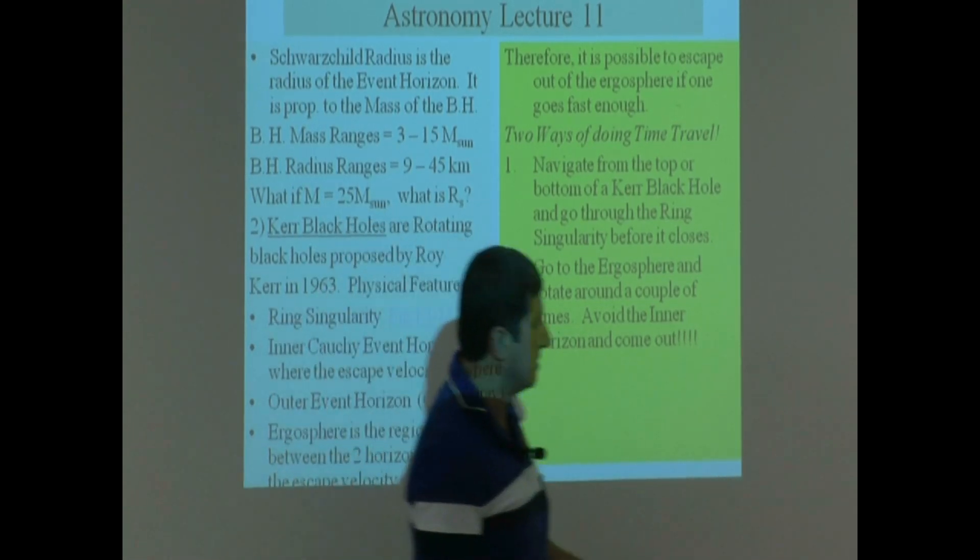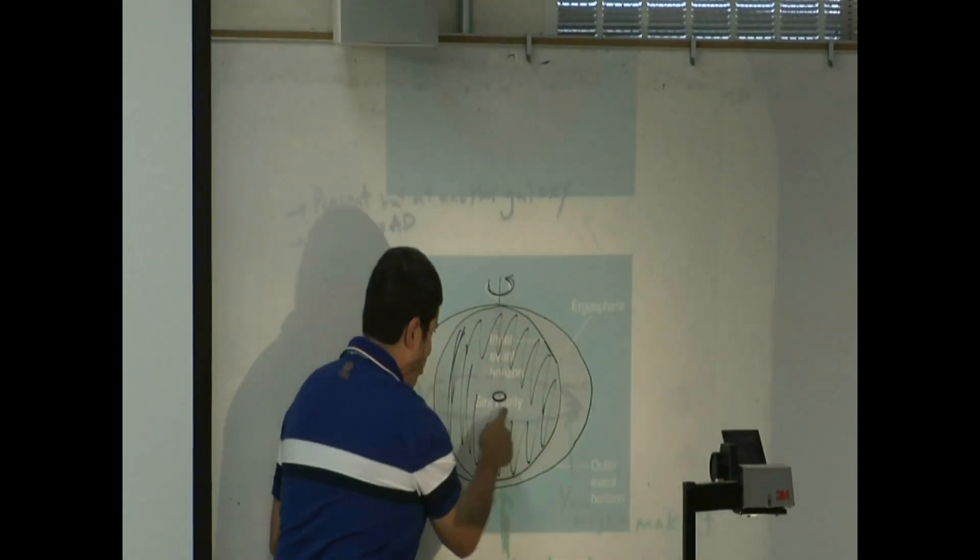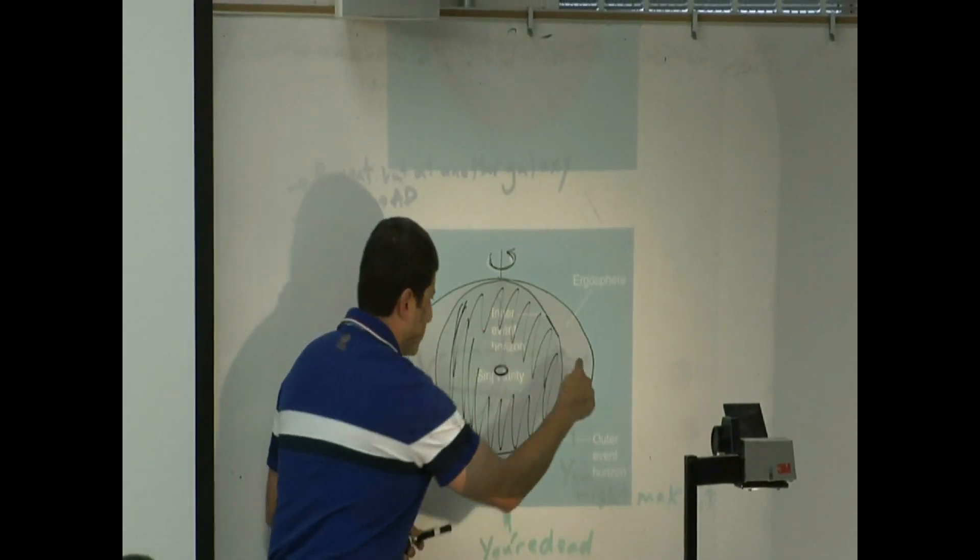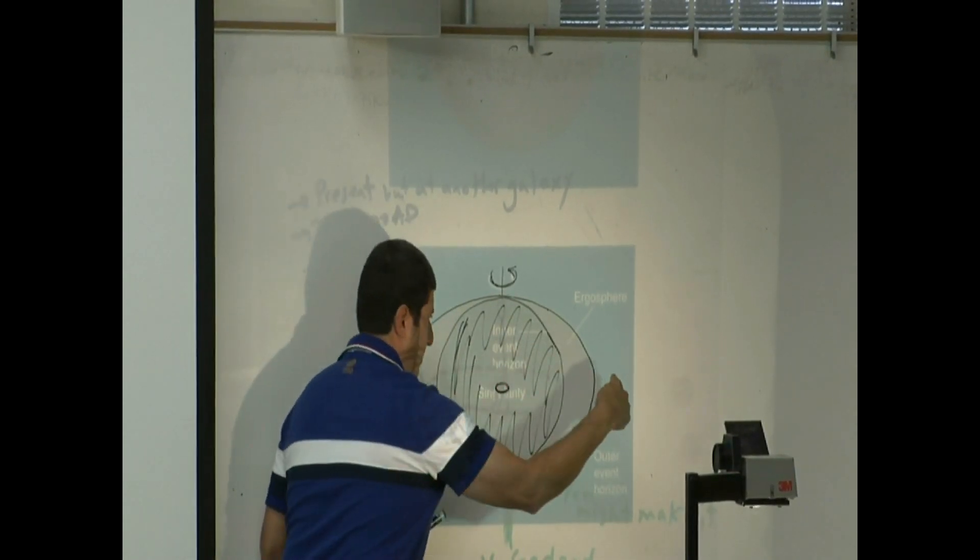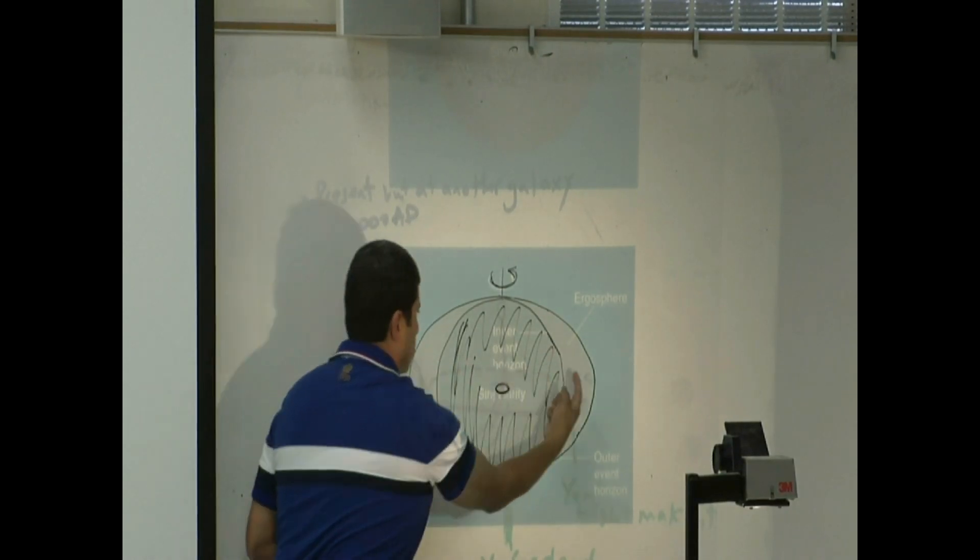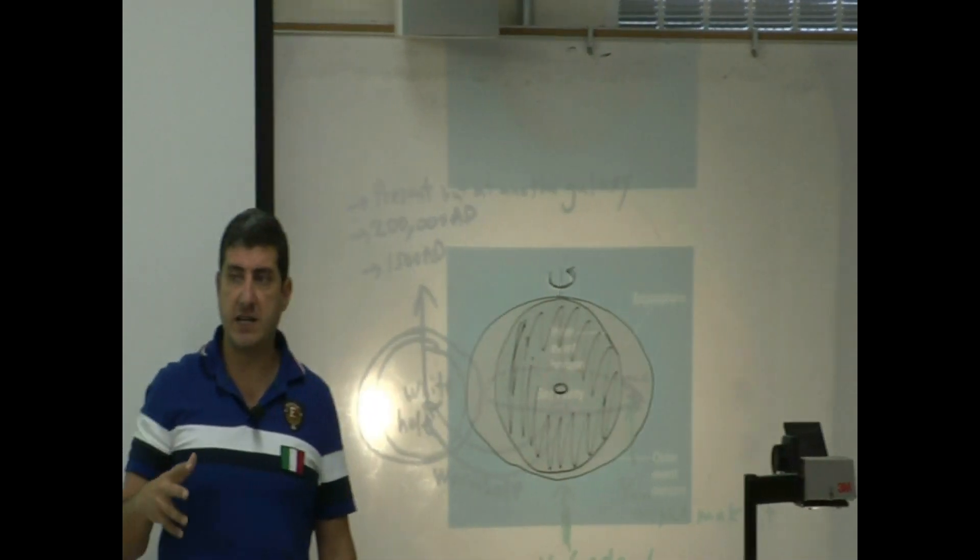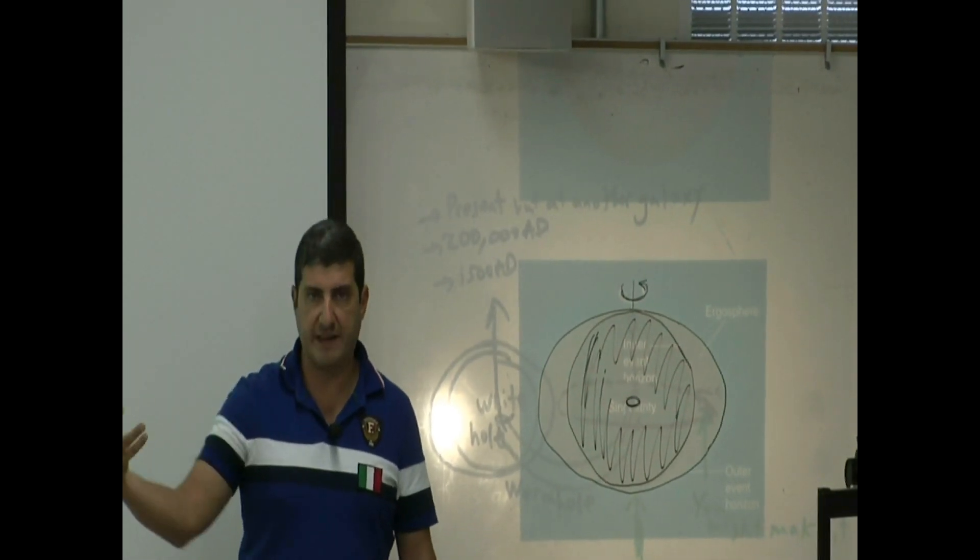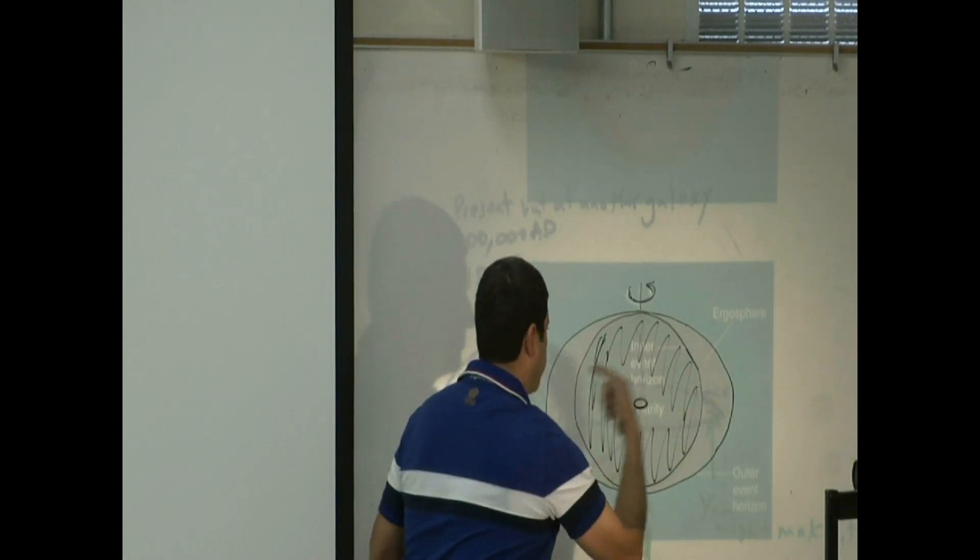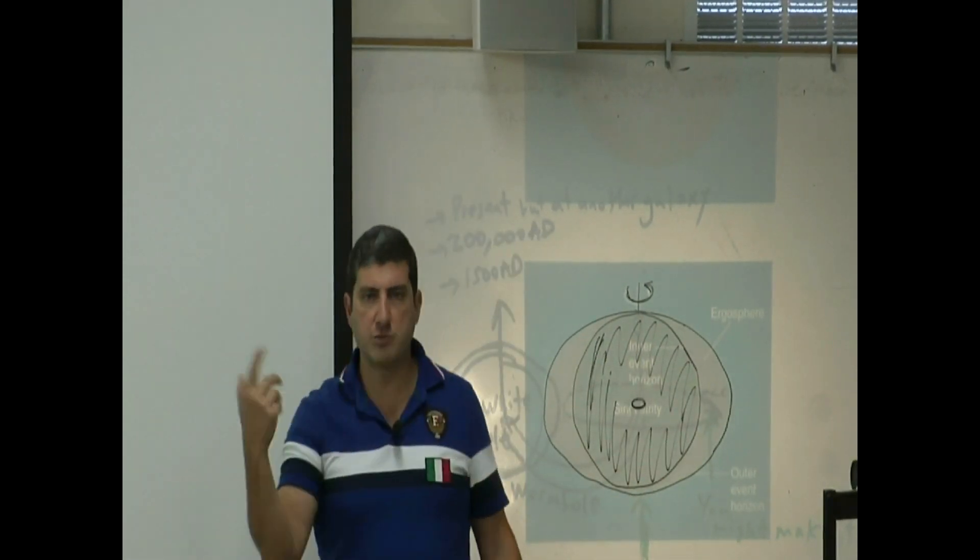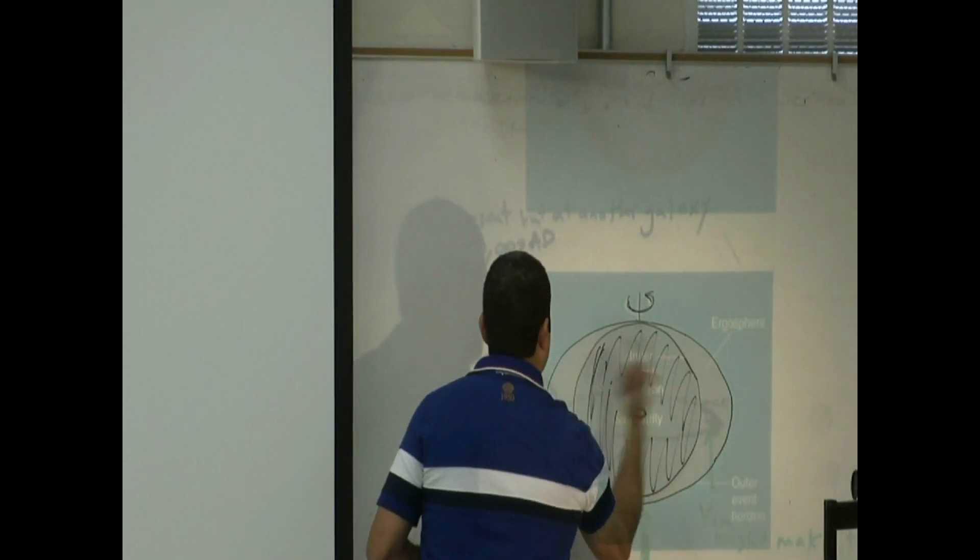The second one is basically saying come like this, maybe with your rocket, and try to avoid the inner part. But enter this region, so imagine your rocket is coming like this, and then start going around it very, very fast. You've got to go close to the speed of light, but you don't have to go faster than the speed of light. So you've got to go like this, go around, come around, and maybe go around ten times or a hundred times or whatever, and then build up enough speed, and then come out.